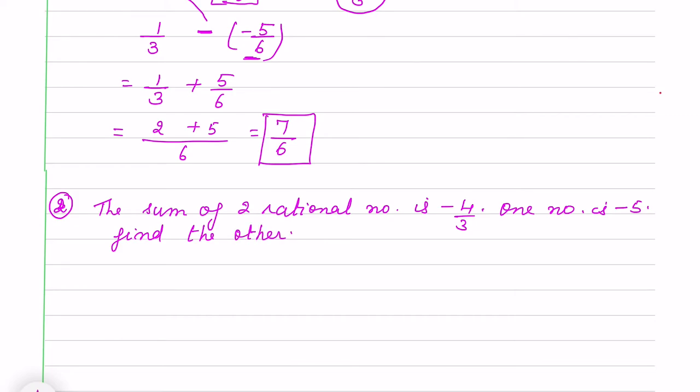How we will do, we can do it algebraically also. Just think about the simple question that sum of two numbers is 5. What I will write here, simply you will say I will write 2 because 3 plus 2 is 5.